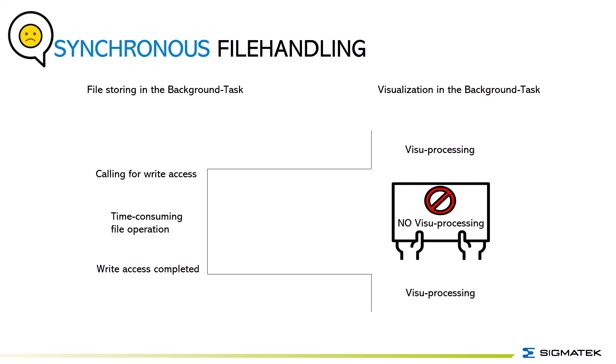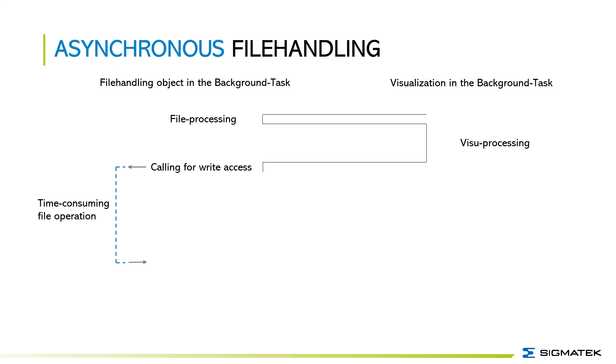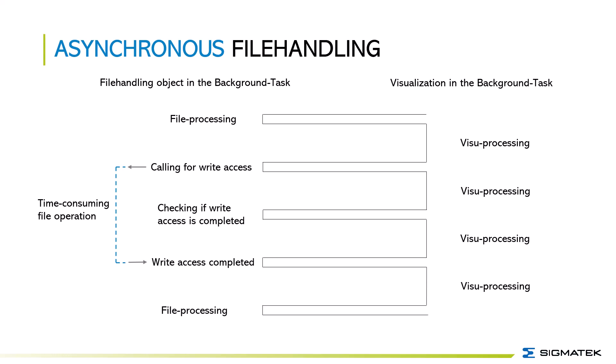The better approach is to do it in an asynchronous way. On one side we have the file storing object in the background task and on the other side we have the visualization in the background task. We start with file processing, then it switches to visualization processing. After a little bit of visualization is processed, we start an extra asynchronous task — shown in the blue line — for the time-consuming file operation. In the meantime the system can switch from visualization to file processing without stopping either task. Asynchronous functions are therefore better for the system.